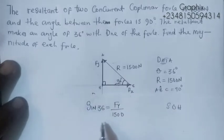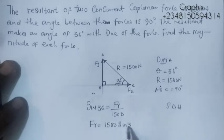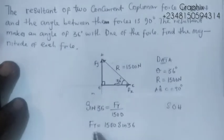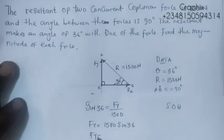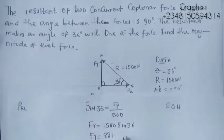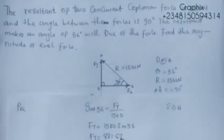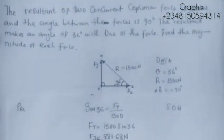Cross-multiplying gives us Fy = 1500 × sin(36°). That gives us Fy = 881.68 Newton. So the magnitude of Fy is 881.68 N.